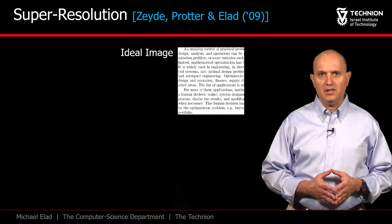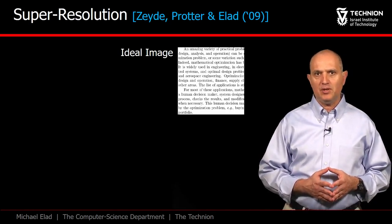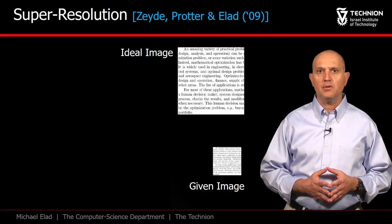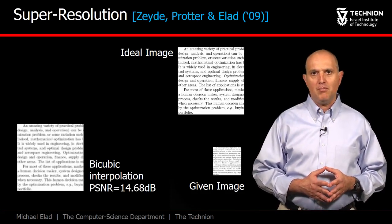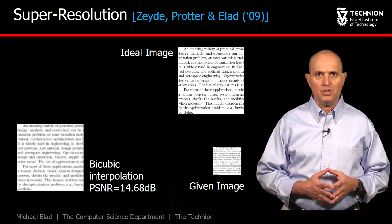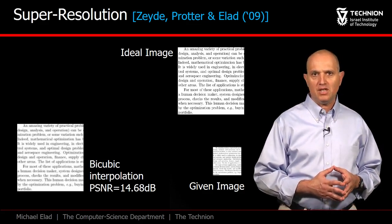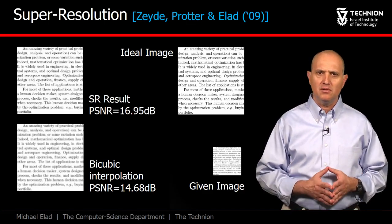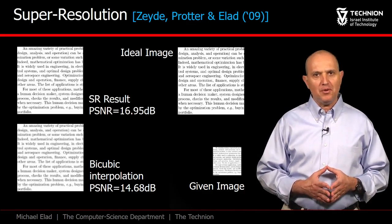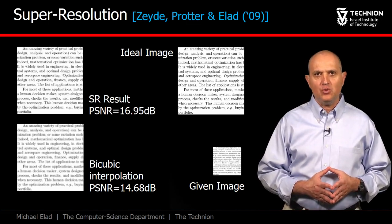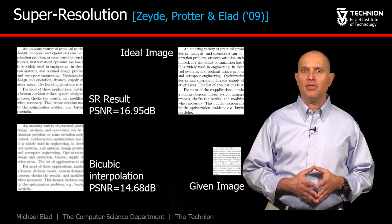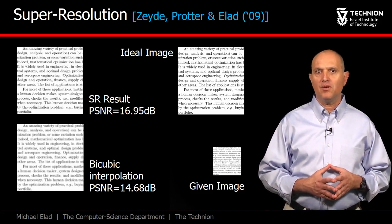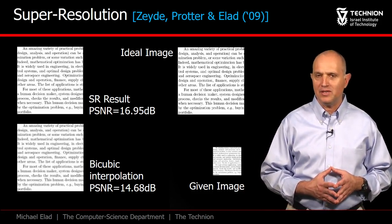Another inverse problem of great interest is single-image super-resolution, where we are given a low-quality image and our goal is to increase its resolution. Bicubic interpolation is a simple way to address this need, but as can be seen, the results are not really good and the text is hardly readable. The super-resolution algorithm based on Sparsland leads to a higher quality outcome, with text that is readable. This result is part of the work done with Matan Proter and Roman Zeideh.